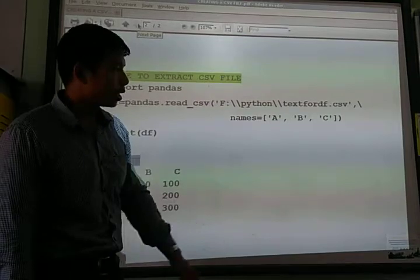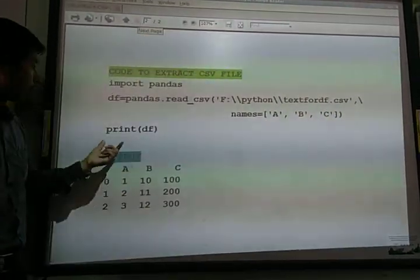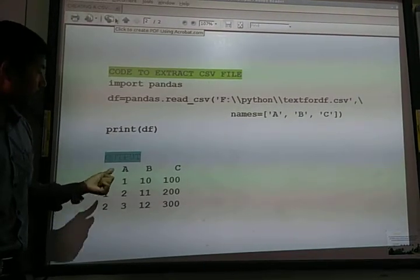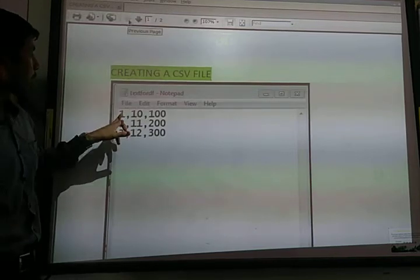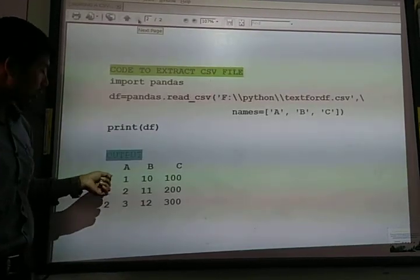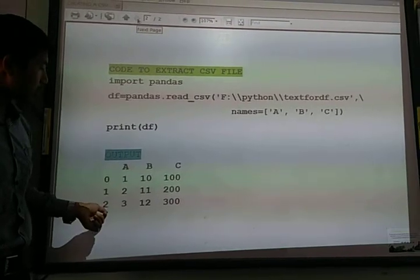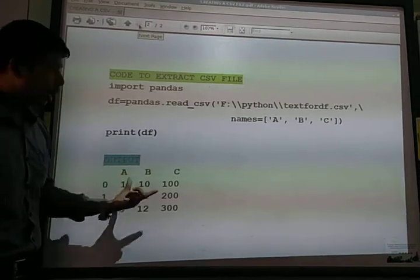You have to mention column names. So here I have written A, B, and C. These are the column names within brackets. When I print the data frame, you will get in the output A, B, and C as column headers. And since the indexes are not mentioned, you get 0, 1, and 2 as the index values. So in this way you can create a data frame from a CSV file using read_csv.